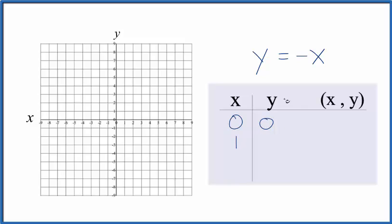And then if x is 1, we have x is 1, y equals negative 1. So we have our second point, and let's just say x is 2. If x is 2, y equals negative 2.